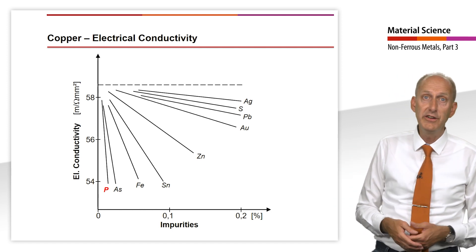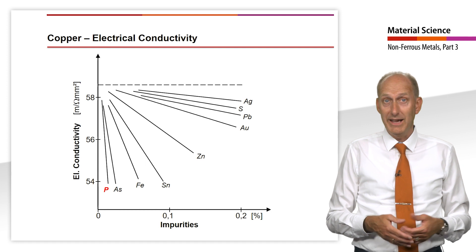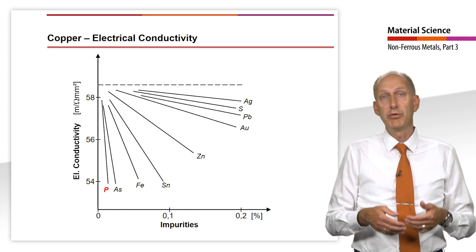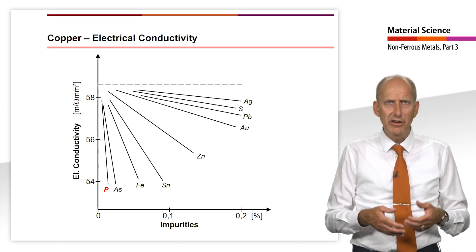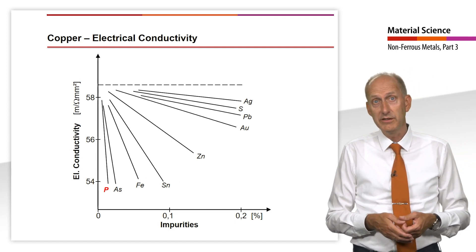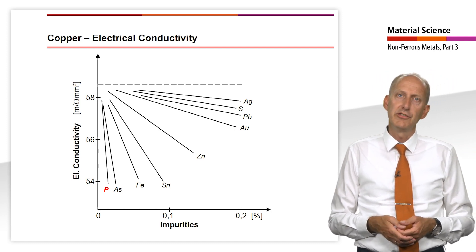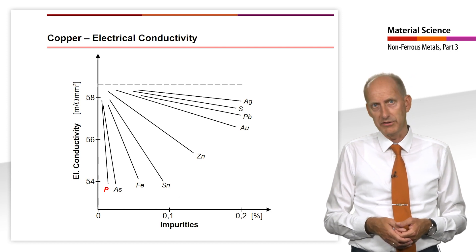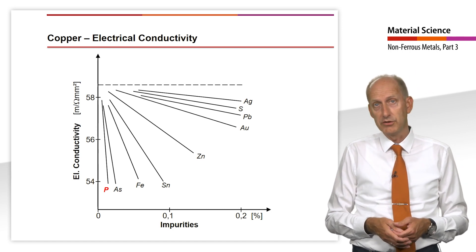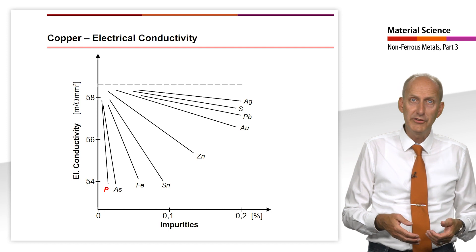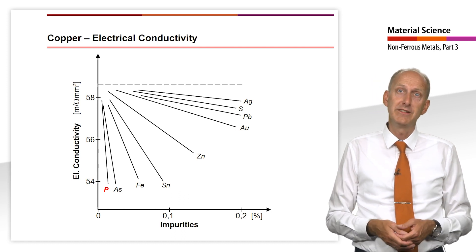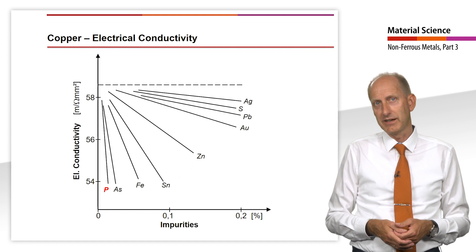Electrical conductivity is very strongly dependent on the degree of purity. Elements that are insoluble in copper are less critical than those that are incorporated in the lattice, where they cause sensitive interference potentials in the electric field, impeding the movement of electrons so that the specific conductivity decreases. Phosphorus is one of these easily soluble elements among the impurities. However, phosphorus is also one of the most effective deoxidation additives and is therefore often added when conductivity is not the decisive property.